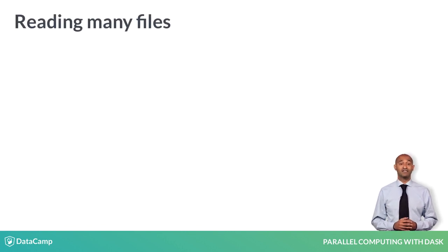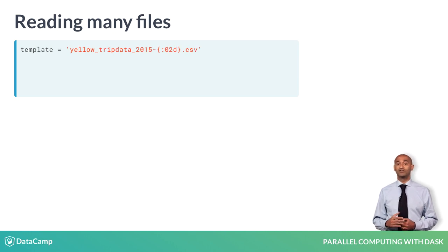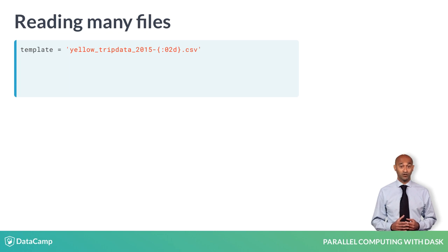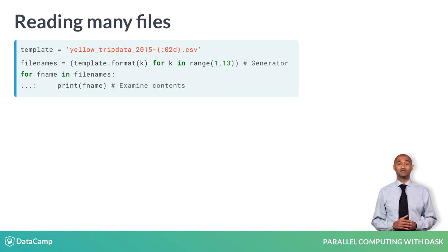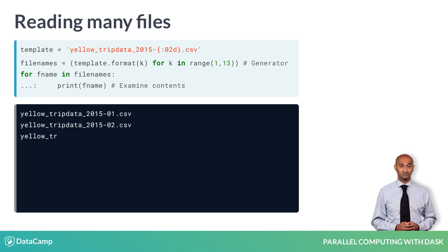Let's use generators now to read many files. We use a slightly different collection of CSV files that describe yellow cab rides in New York City. We use the string format method and a generator file names to generate names of CSV files for each month of 2015.